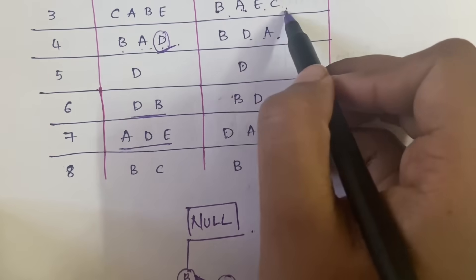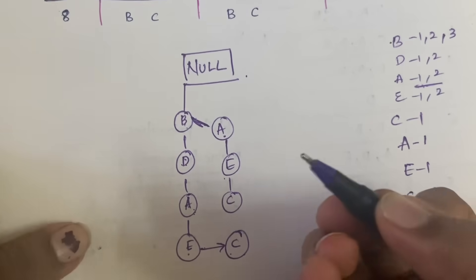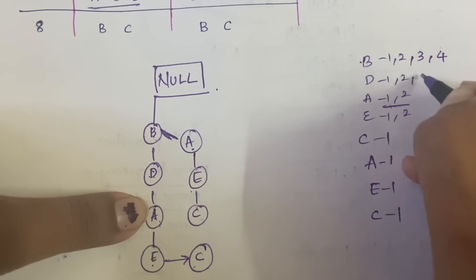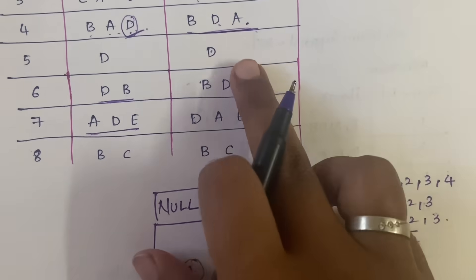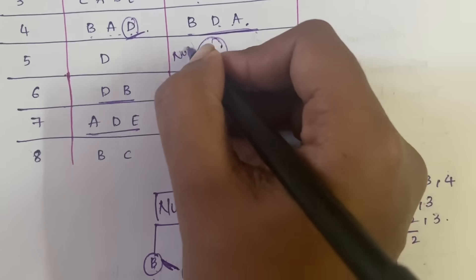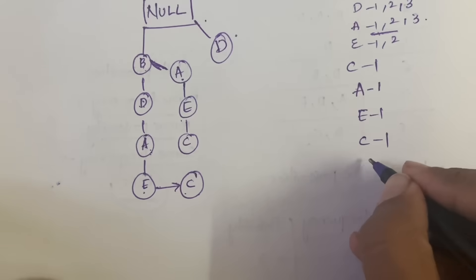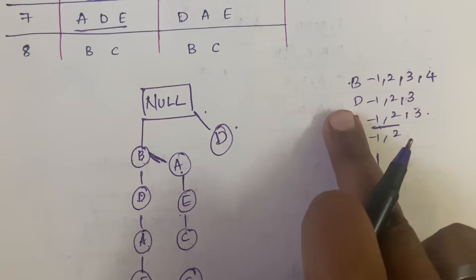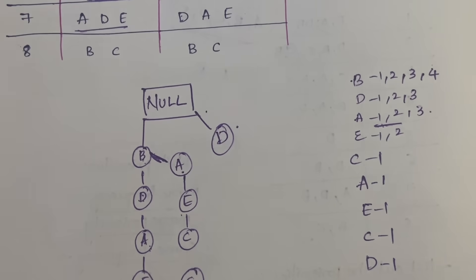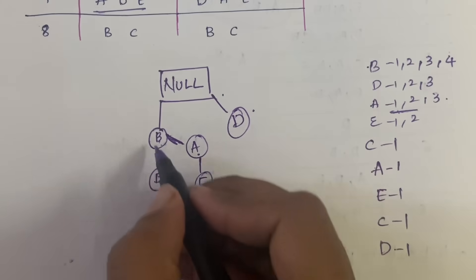Next is the fourth transaction B, D, A. We already have B → D → A in the tree, so we just update occurrences: B becomes 4, D becomes 3, A becomes 3. Next we have the transaction D alone — before D there is nothing, meaning it starts from null directly. So from the null root, D gets a new branch with D equal to 1, since this D is attached to B and not the root node.